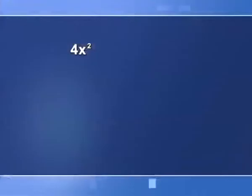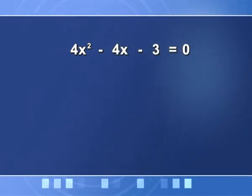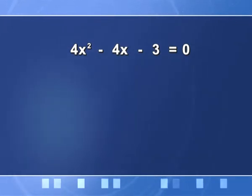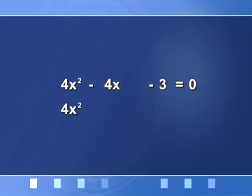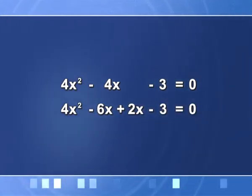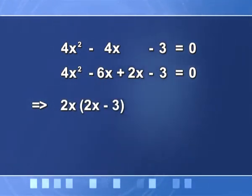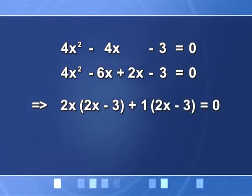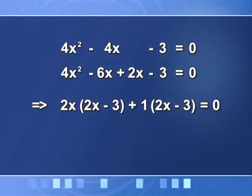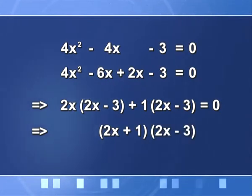We consider another equation: 4x² − 4x − 3 = 0. To factorize, we split the middle term in relation to the first and third terms. I write 4x² − 6x + 2x − 3 = 0 — note that −6x + 2x gives me −4x, so I have not changed the equation. Taking 2x common in the first two terms gives 2x(2x − 3) + 1(2x − 3), and 2x − 3 is a common factor, which gives (2x + 1)(2x − 3) = 0.